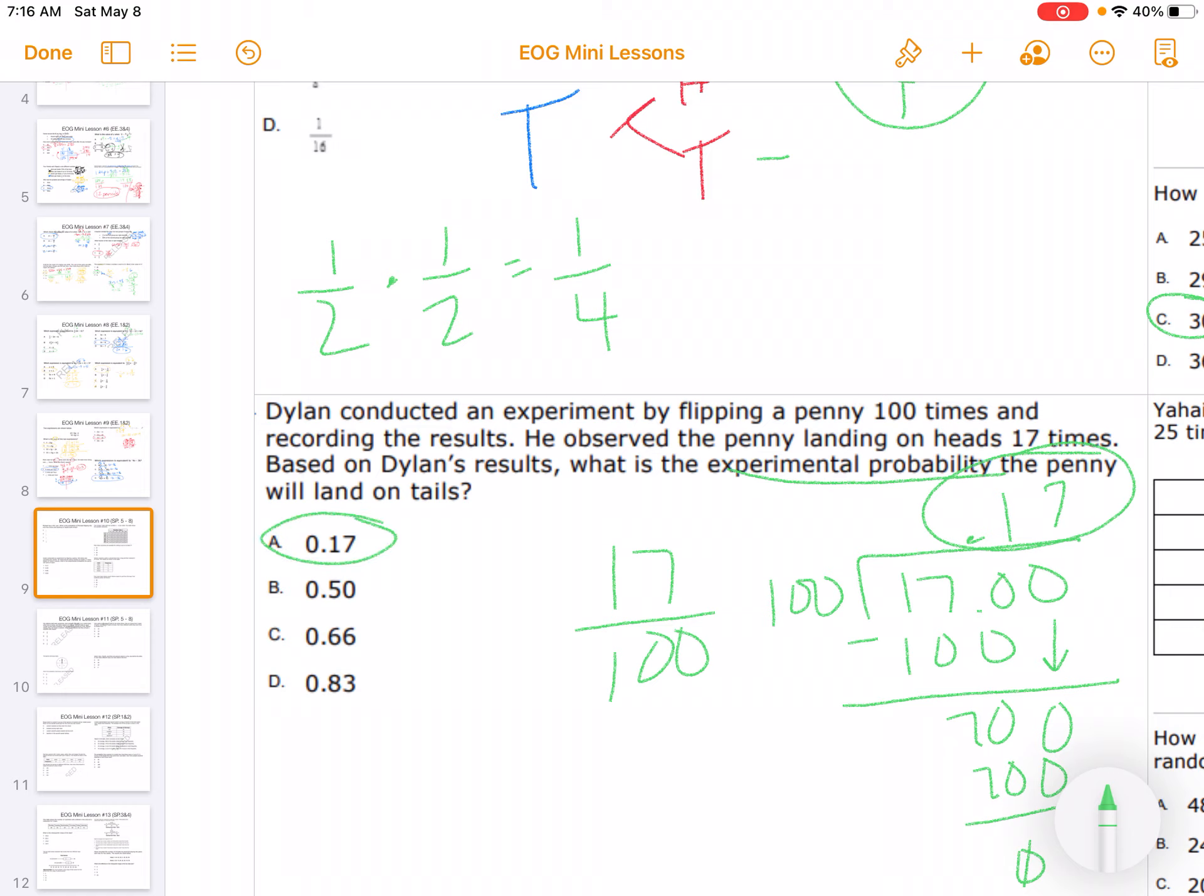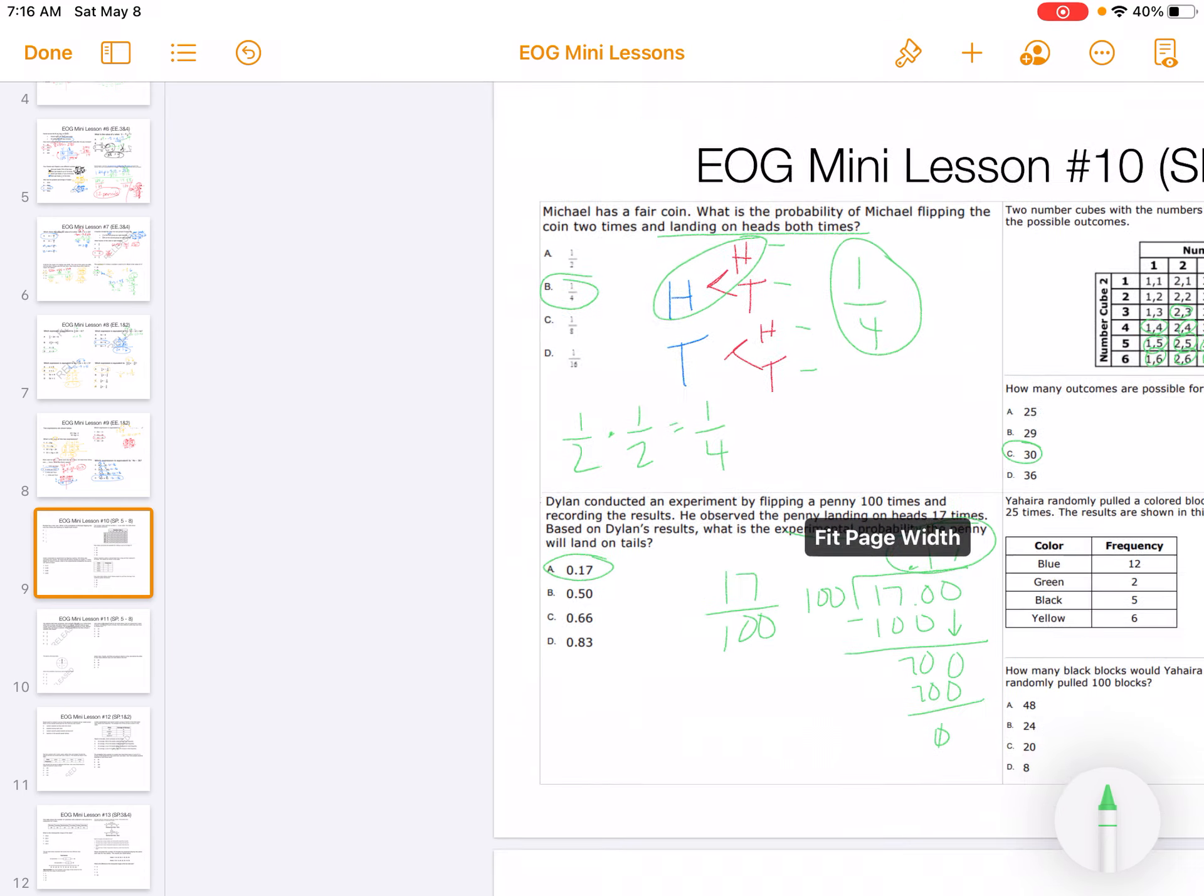So the experimental probability is what's actually happening. The theoretical probability is what should happen. In this case, it should have been 0.5, so it should have been 50-50. But because they're asking for the experimental probability, what did this experiment have that happened? It would be 0.17 because 17 times out of 100.